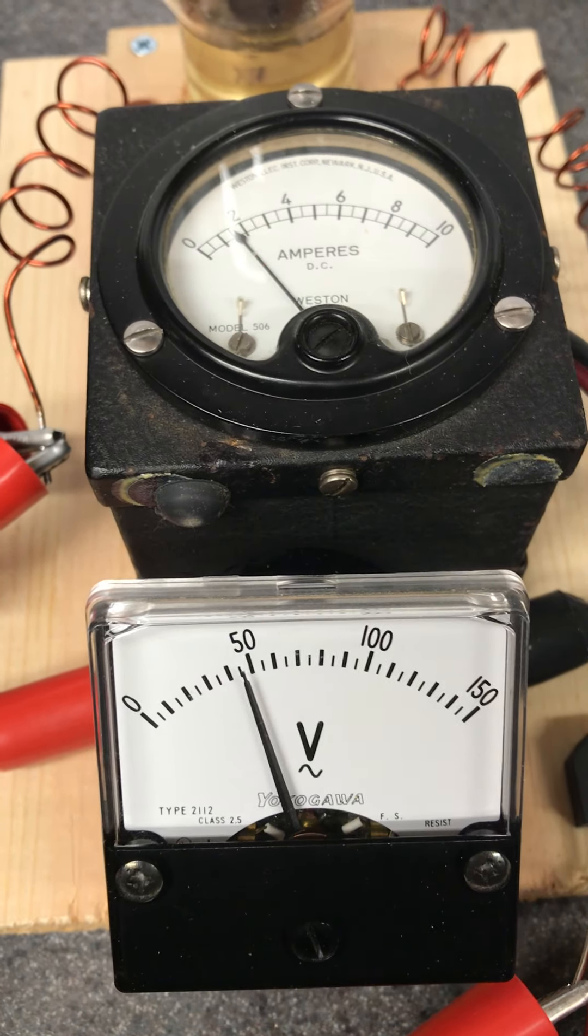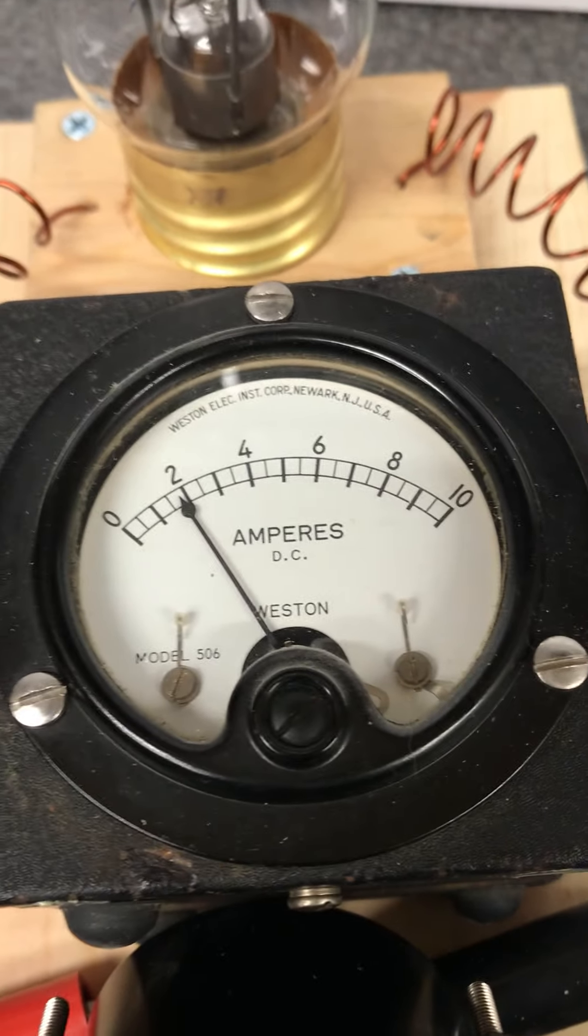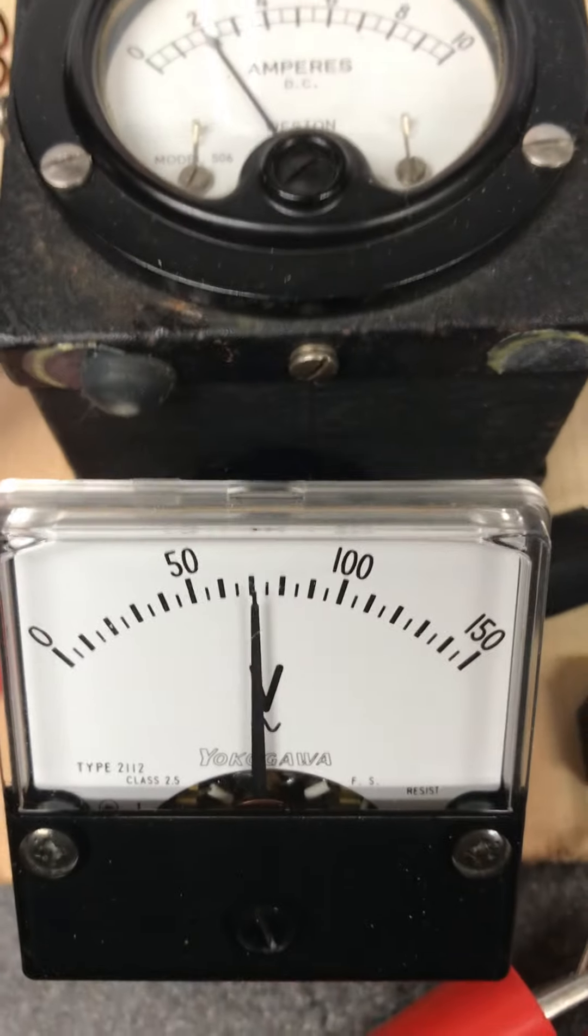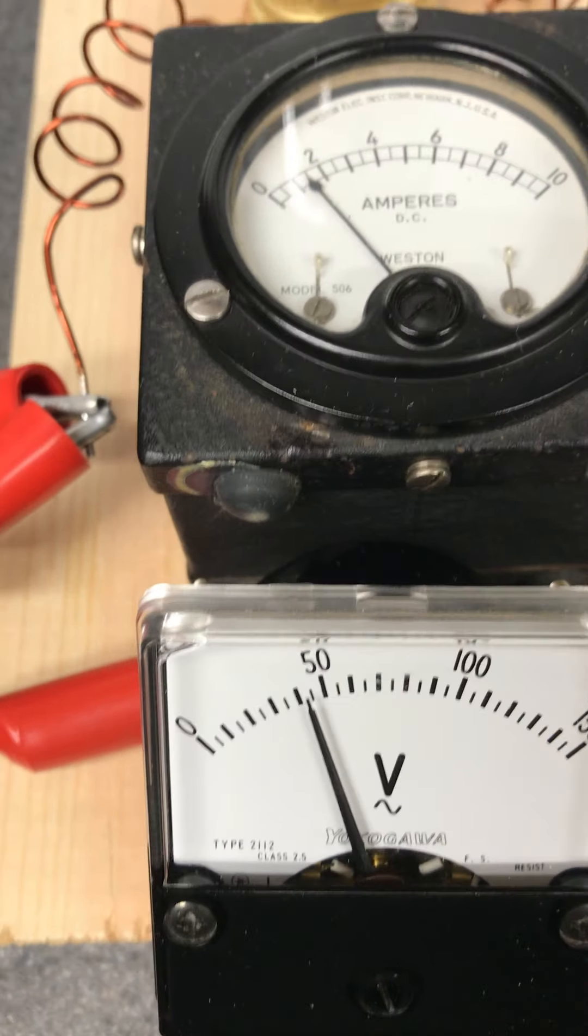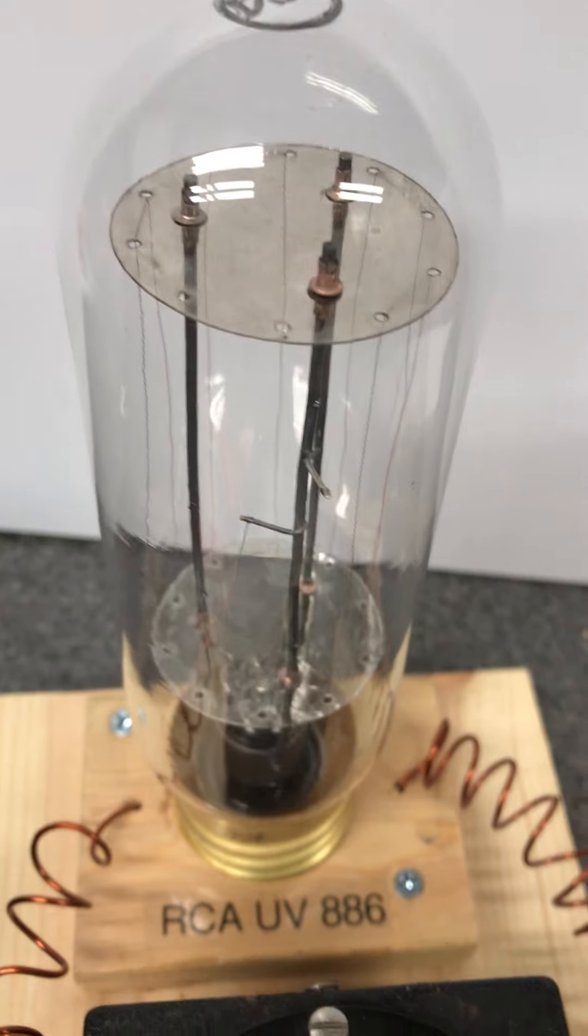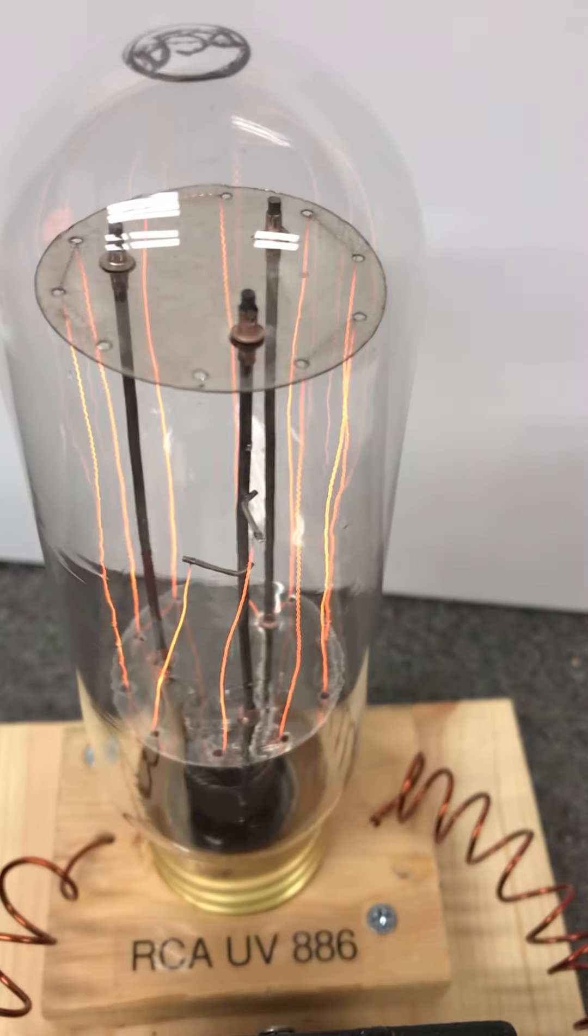And by golly, look at that folks, it's drawing current and look how much. And here's our voltage right. So look at the voltage swing and look how constant the current is, right around 2 amps. It doesn't seem to move much.